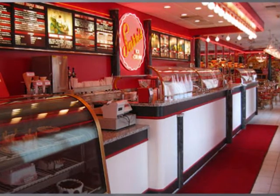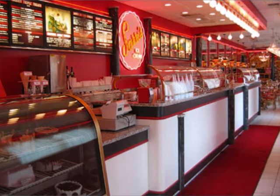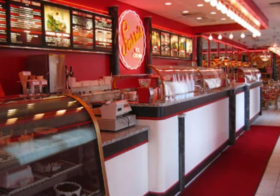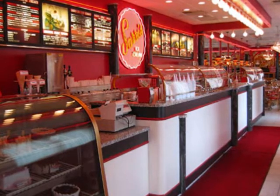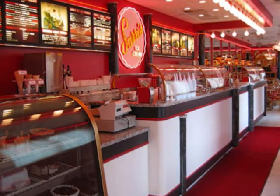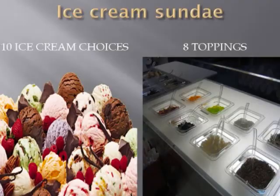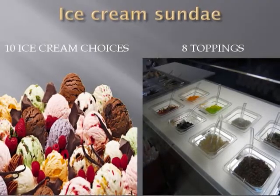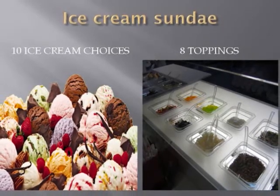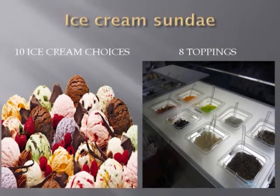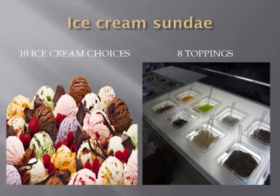Let's say you decide to open up a new ice cream shop, and for $2 you allow someone to purchase one scoop of ice cream and one topping. You want to advertise just how many choices people have. You have ten different types of ice cream and eight different types of toppings. How many choices would people have if they're allowed to have one type of ice cream and one type of topping?